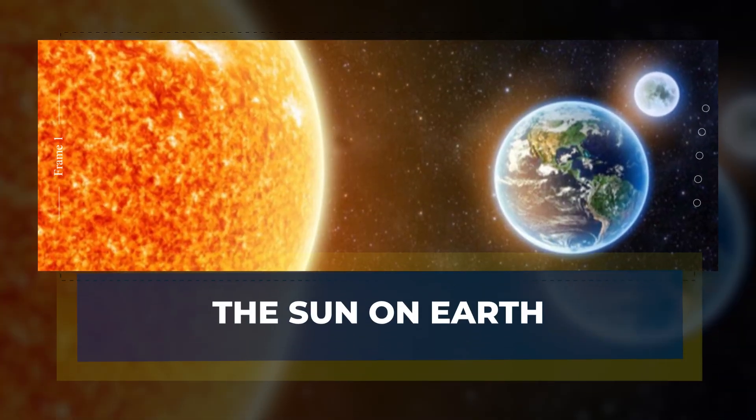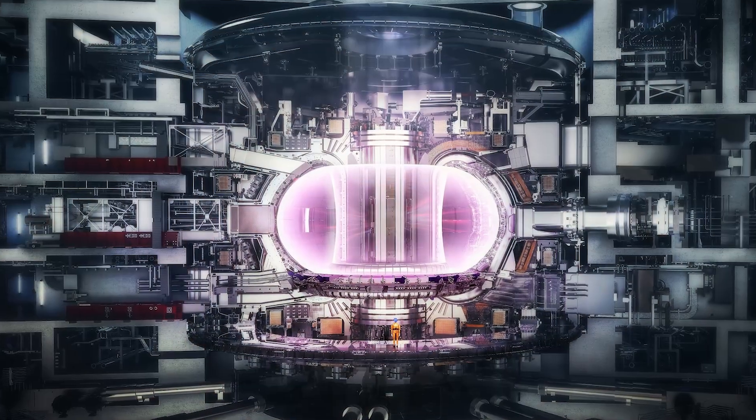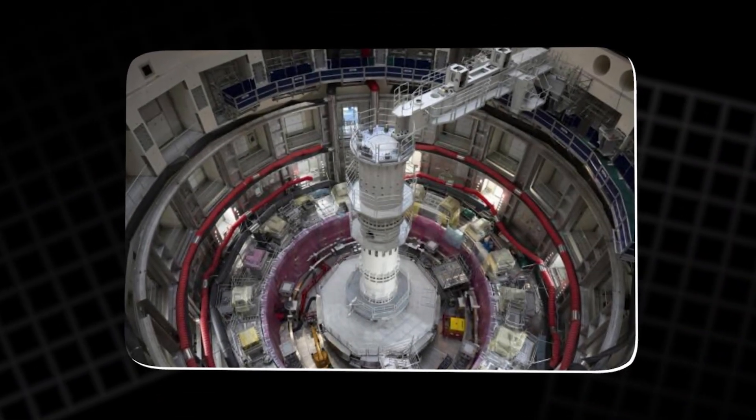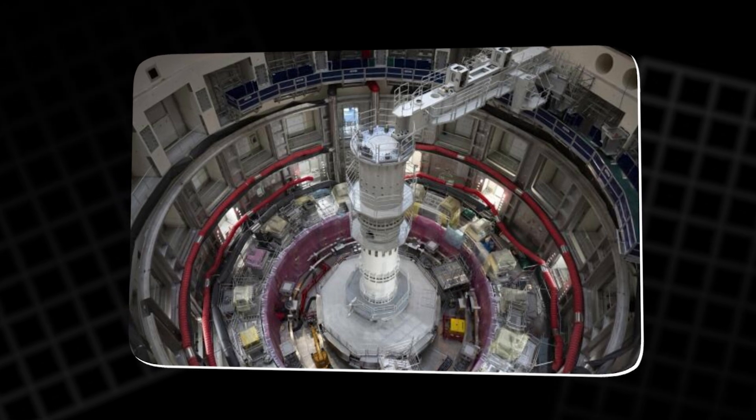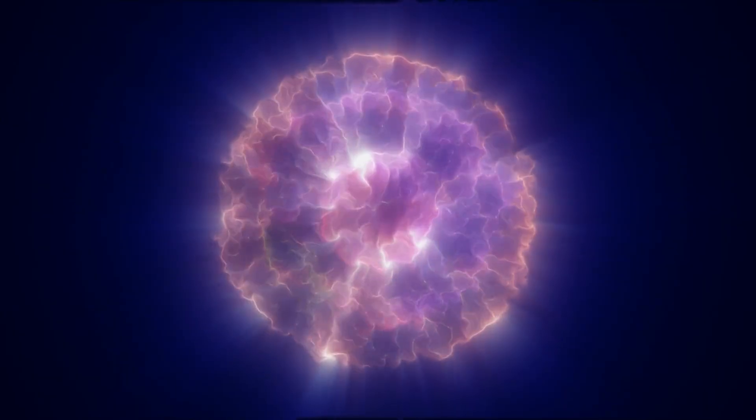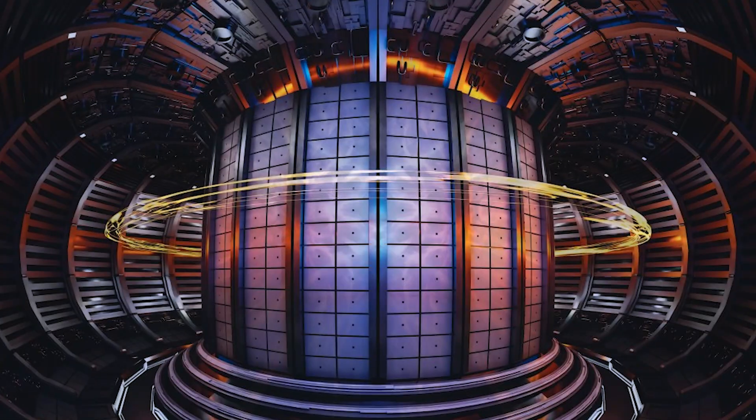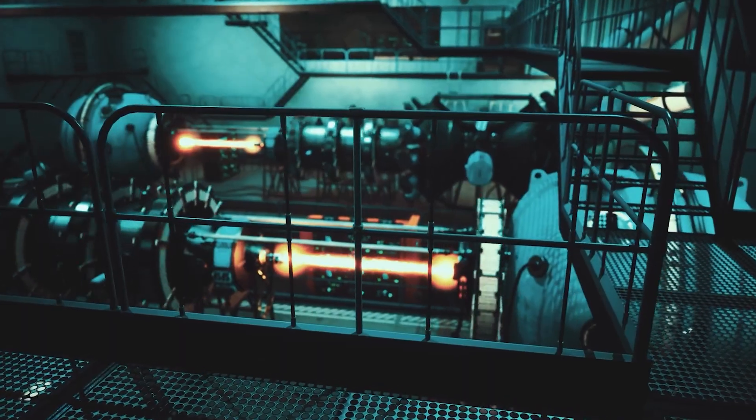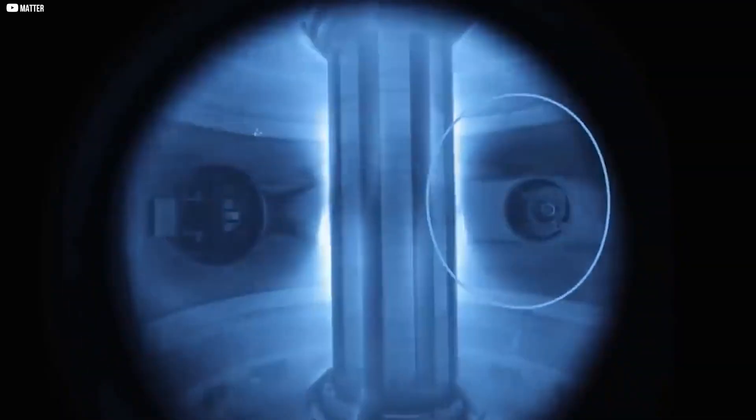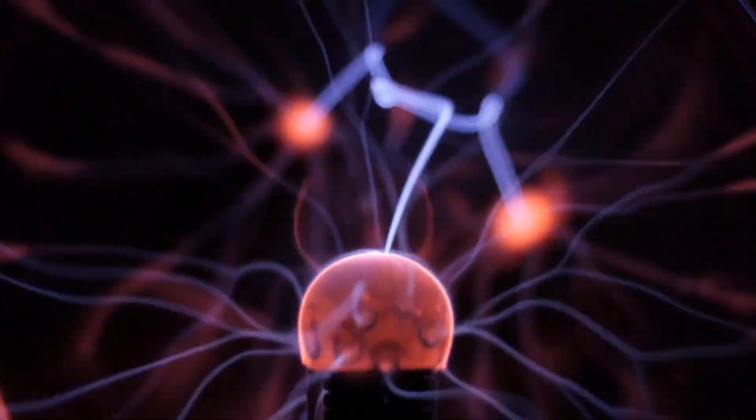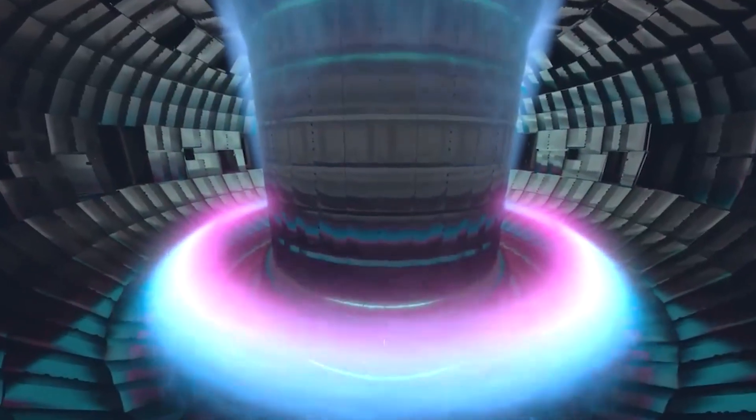The sun on earth. At the center of the fusion dream lies a machine that looks more like science fiction than science. The tokamak. A massive, ring-shaped reactor designed to bottle the sun. Not metaphorically. Literally. Inside, hydrogen atoms are heated until they shed their electrons and become plasma, the fourth state of matter. At over 150 million degrees Celsius, these particles move so fast they can collide and fuse, releasing incredible energy. But there's a problem. Nothing solid can touch plasma that hot. It would vaporize in an instant. So instead, powerful superconducting magnets are used to suspend it mid-air, shaped like a spinning donut, known as a torus.